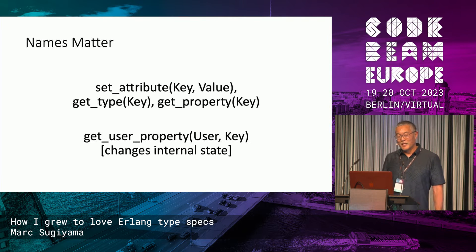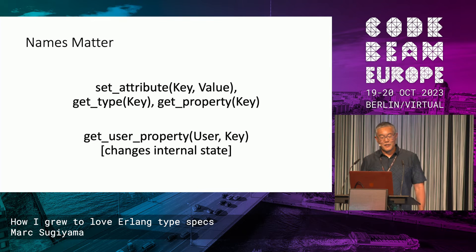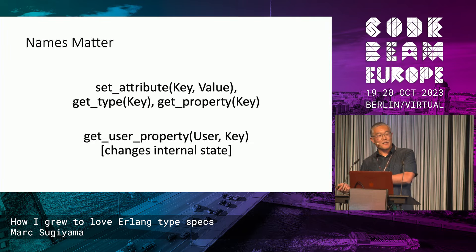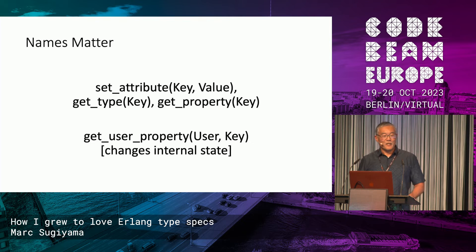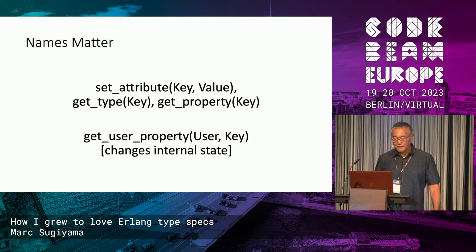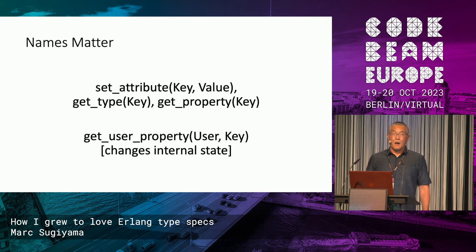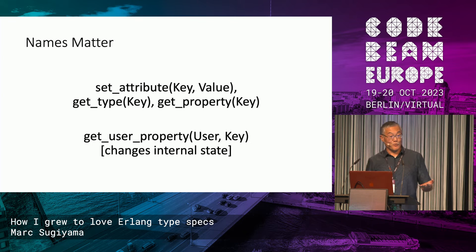There were also things that were kind of misleading — functions that said they would be getting something, but they would not only get it, but also change the state of something else that was only tangentially related and affected the behavior. That was also confusing, because you don't expect a function that gets something to actually be modifying the state of the system. As I was working on this, I started to think about what would have made it easier to understand what I was supposed to do and how this worked.